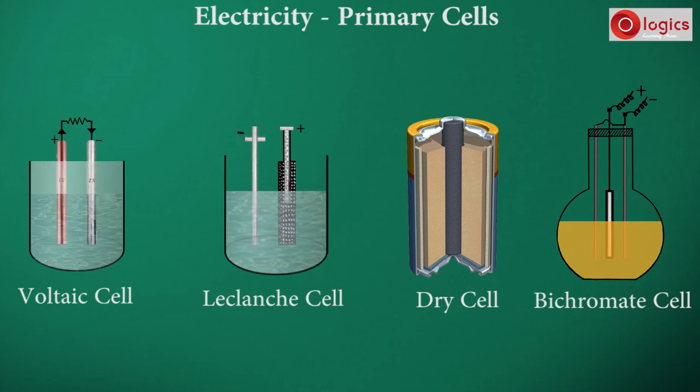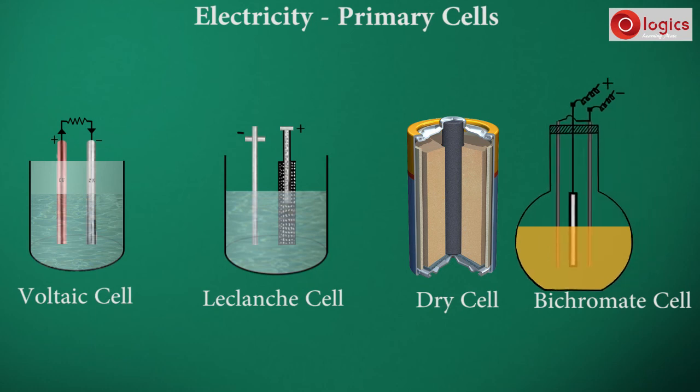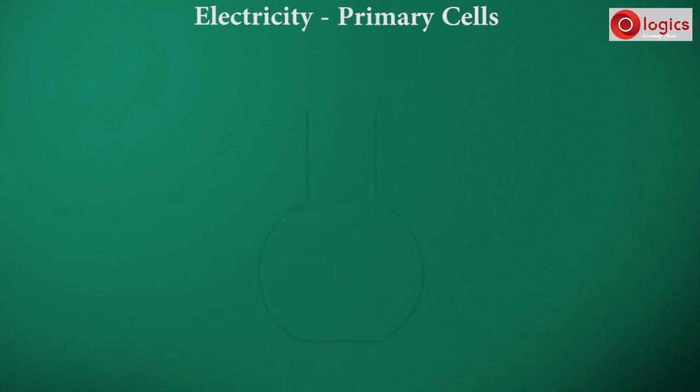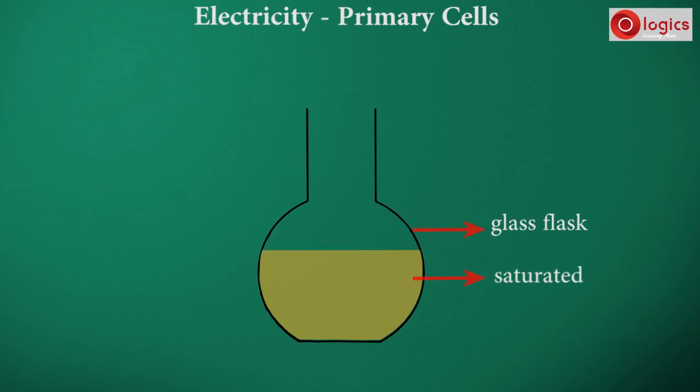Let us understand the construction of bichromate cell. This is a flat-bottomed glass flask. Fill the flask half with a saturated solution of potassium bichromate. This potassium bichromate is acidified with sulfuric acid.